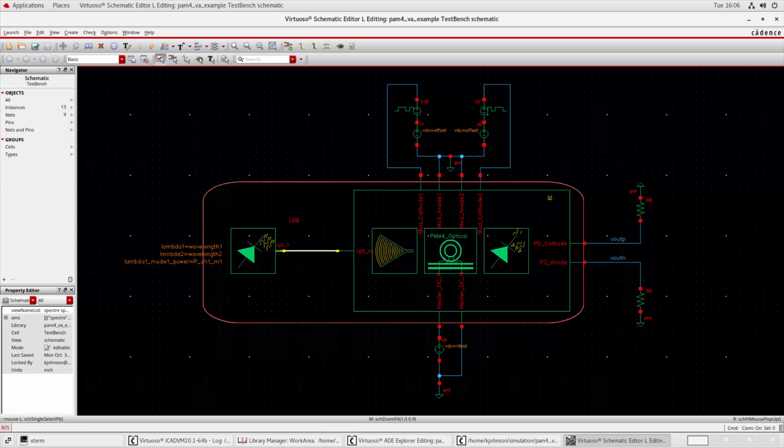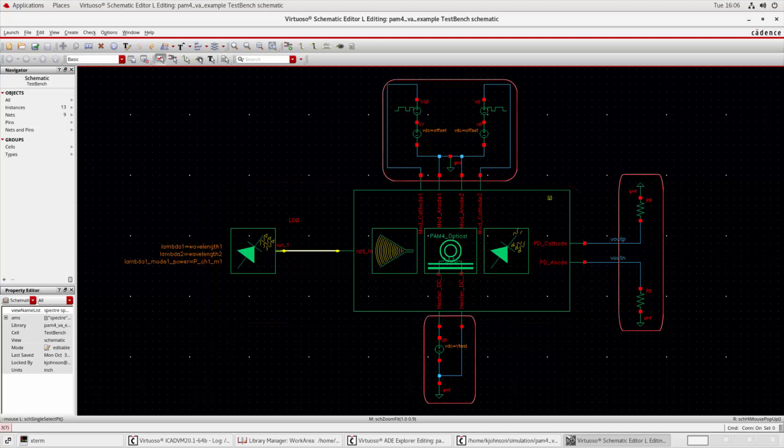It includes a laser source, a gradient coupler, waveguides, a ring modulator, and a photodetector. It also includes electrical driving circuitry for the ring and resistors for the anode and cathode of the photodetector.